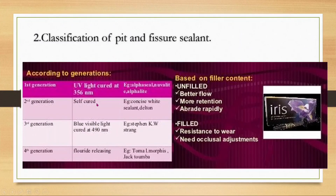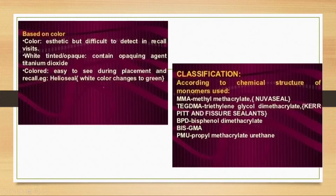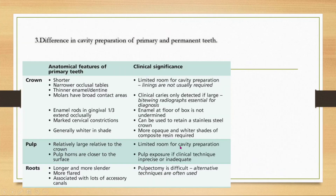Further classification of sealants: based on filler content — unfilled and filled; based on color; and based on chemical structure — MMA-based, TEGDMA-based, BPD, bis-GMA, and PMMA. Next, regarding differences in cavity preparation of primary and permanent teeth based on anatomical features.